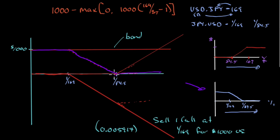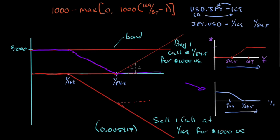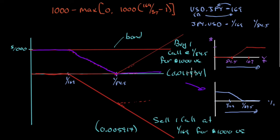So I sold one call at 1/169 (which equals 0.005917 USD/JPY) for $1,000 notional. And I bought one call at 1/84.5 (which equals 0.011834 USD/JPY) for $1,000 notional. So the replicating portfolio is: own the $1,000 bond, sell one call on the USD/JPY rate at 0.005917, and buy one call at 0.011834 — everything denominated in US dollars.